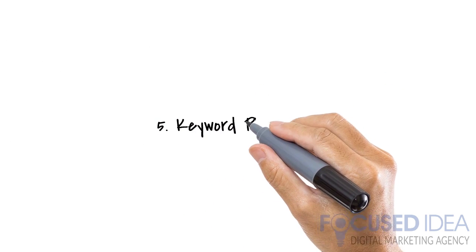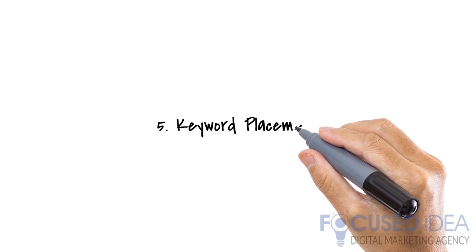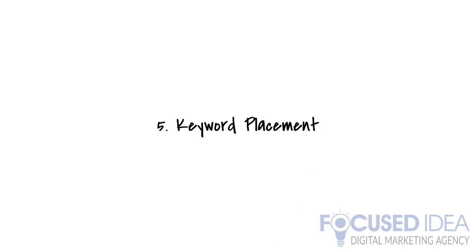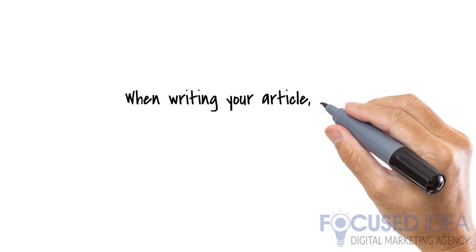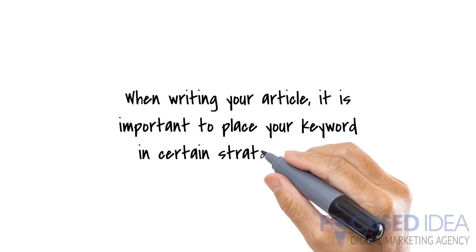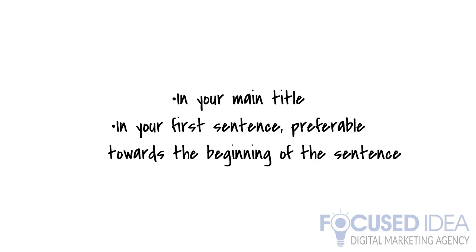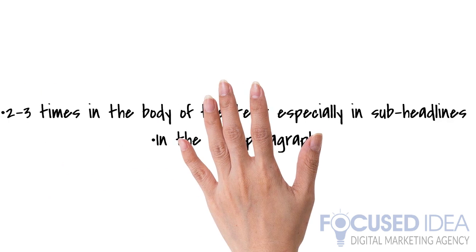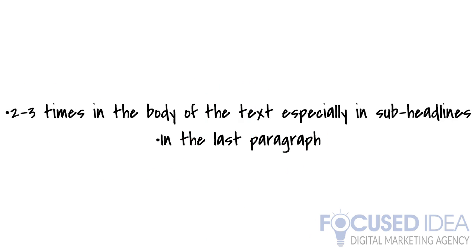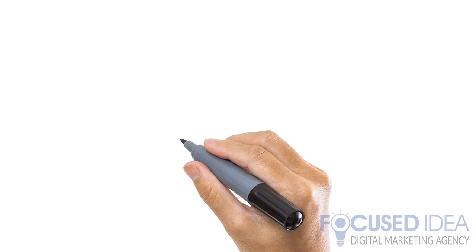5. Keyword Placement. When writing your article, it is important to place your keyword in certain strategic areas: in your main title, in your first sentence preferably towards the beginning of the sentence, 2-3 times in the body of the text especially in sub-headlines, and in the last paragraph.